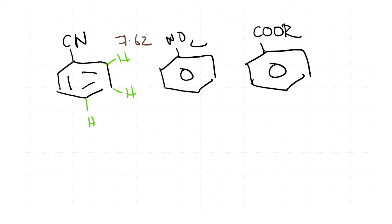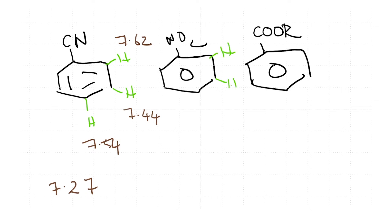For the CF3-substituted benzene, the chemical shift values are 7.62, 7.44, and 7.54. Keep in mind the reference is benzene at 7.27. For nitrobenzene, the chemical shift values are 8.21, 7.52, and 7.64. The ortho position has shifted substantially — moving from 7 to 8.